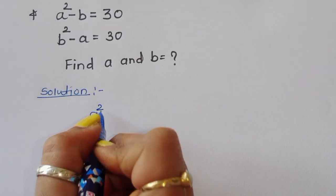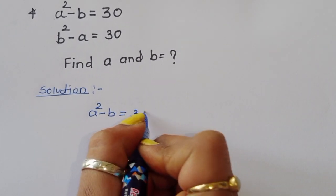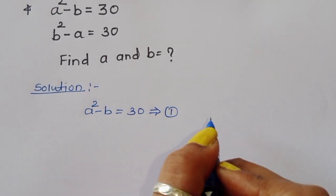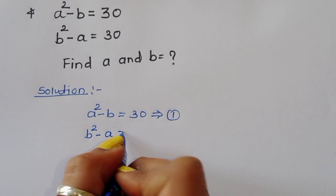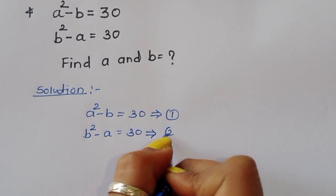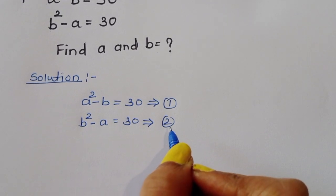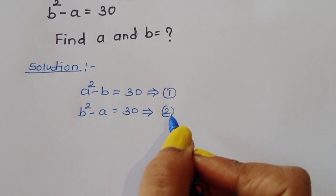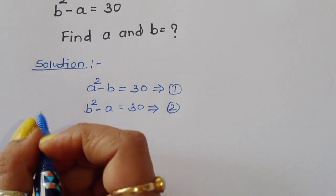Equation 1 is: a squared minus b is equal to 30. Equation 2 is: b squared minus a is equal to 30. We can subtract equation 2 from equation 1.